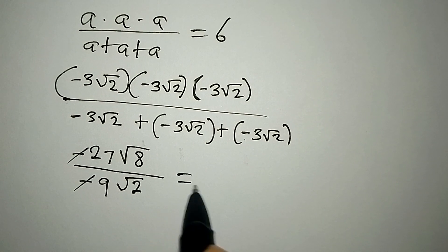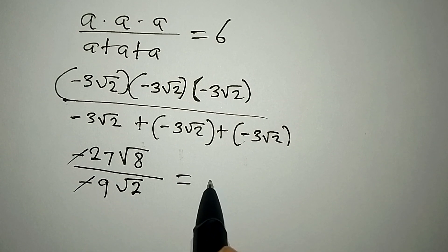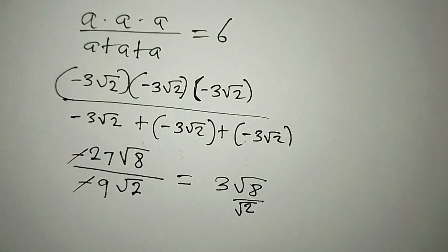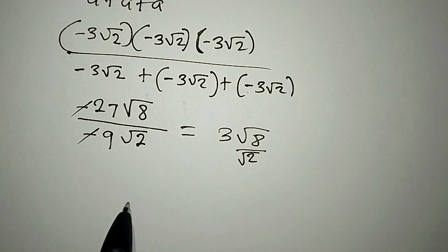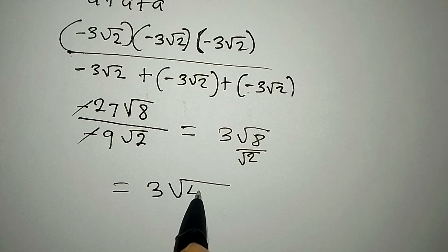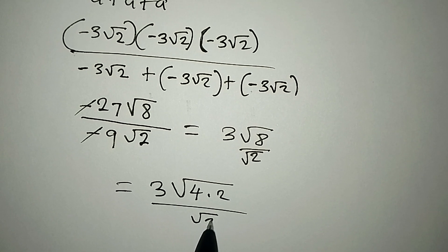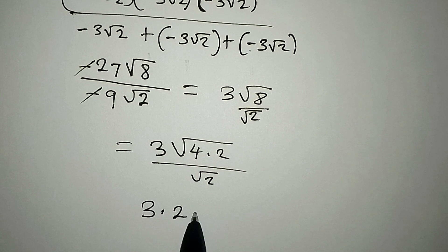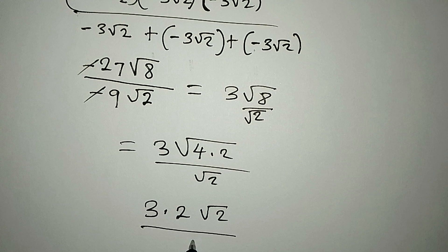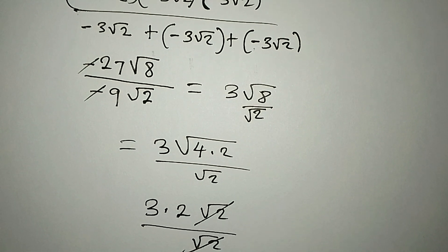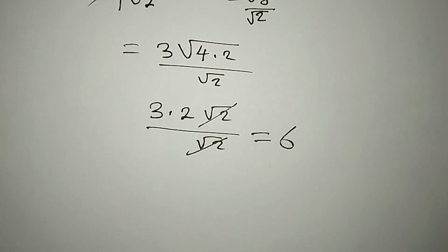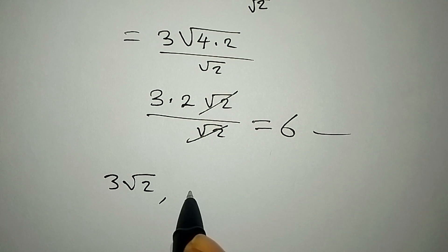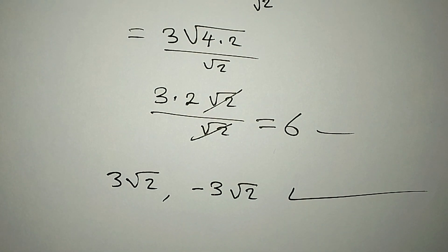The root parts still multiply to √8. In the denominator, negative 3 plus negative 3 plus negative 3 gives negative 9, so we have negative 9 root 2. The negative cancels the negative, leaving 27 divided by 9, which is 3. So we have 3√8 over √2. Breaking down as before: 3 times √4 times √2 over √2 gives 3 times 2 equals 6. Both values, 3√2 and negative 3√2, satisfy the equation.